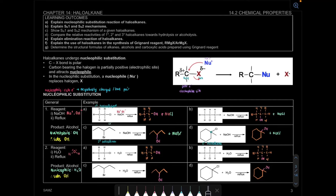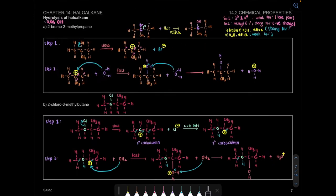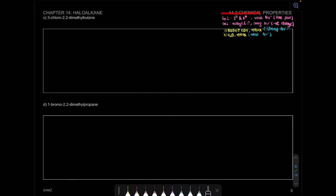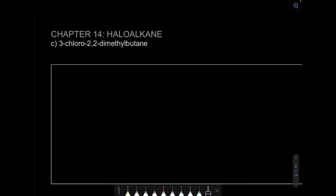Assalamualaikum and hello everyone. In this video we continue talking about the SN1 and SN2 mechanism of haloalkanes. Let's look at your notes on page eight. This is the summary from the previous video. First, let's draw the compound - it's butane, so we have four carbons, and then 3-chloro-2,2-dimethylbutane. So at carbon 2 we have two methyls, and then we have one chloro. The rest we're going to complete the molecule with hydrogen.